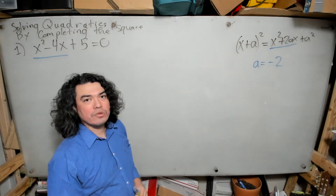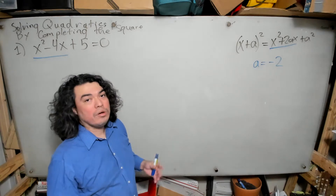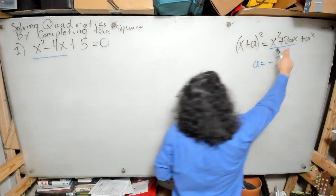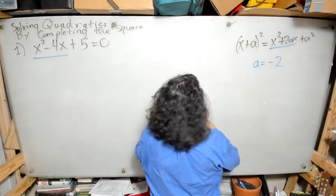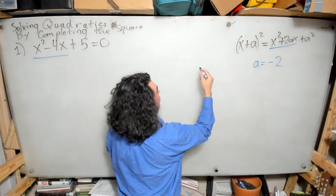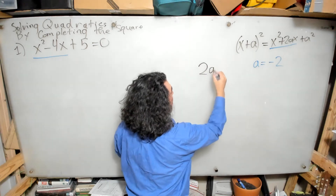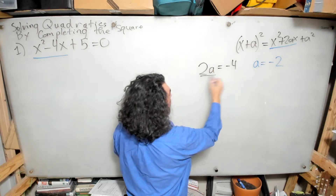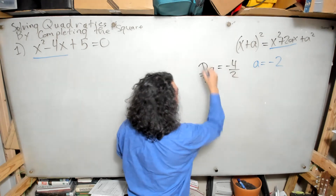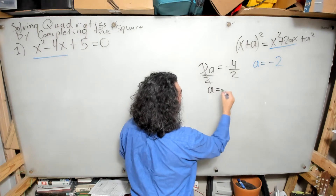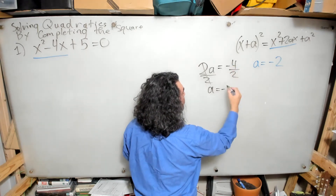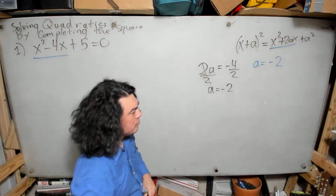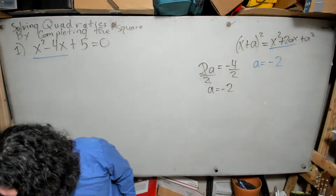Now suppose it didn't come that easily. In cases where the number is not obvious, I would set 2a equal to negative 4 and solve it like any other equation. Dividing both sides by 2 gives a equals negative 4 divided by 2, which is negative 2.